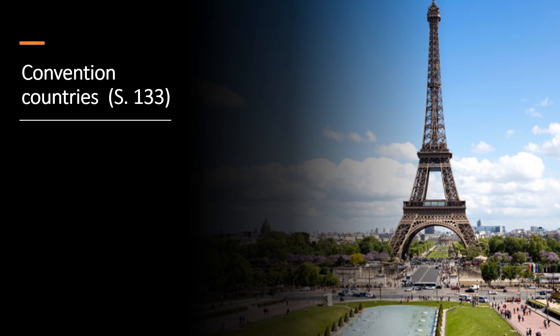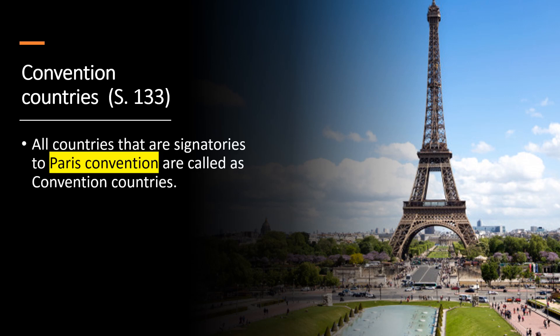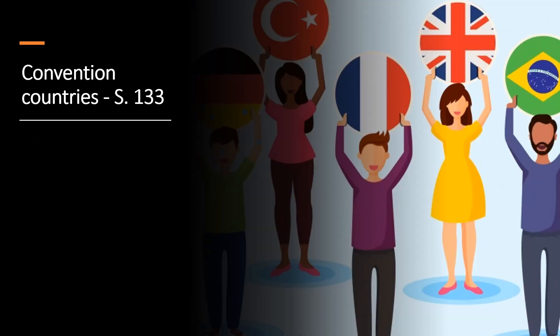Before we understand convention application, it is important to know first what convention countries are. Please remember that all countries that are signatories to the Paris Convention are called convention countries. Convention countries work on the principle of national treatment — the kind of privileges a convention country grants to its own citizens with respect to grant of patents and protection of patent rights, it should grant the same protection to other member countries of the Paris Convention.